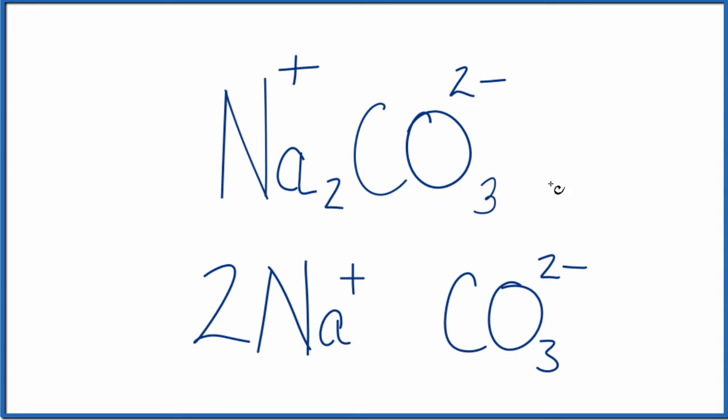So in answer to our question, Na2CO3, it's made up of two plus one, three ions. We have the two sodium and the one carbonate ion.